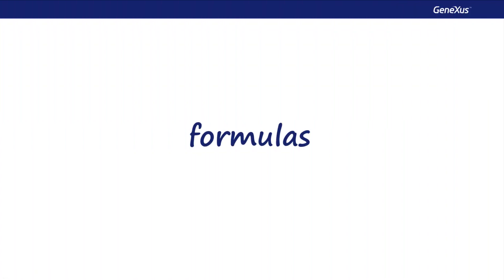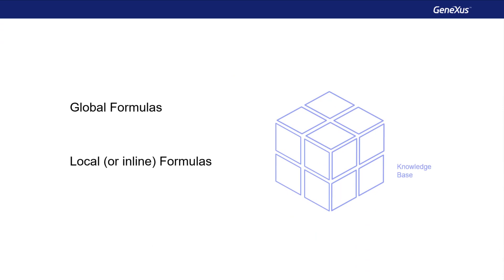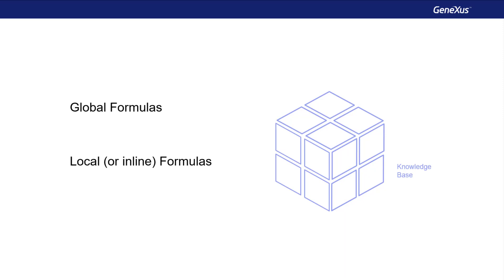There are times when we need the application to solve a calculation involving values from certain attributes, constants, and or functions. For these cases, GeneXus provides formulas. Formulas can be defined in two ways: globally, where the calculation will be available throughout the knowledge base, or locally or inline, where the calculation will be available only in the object in which it has been defined.